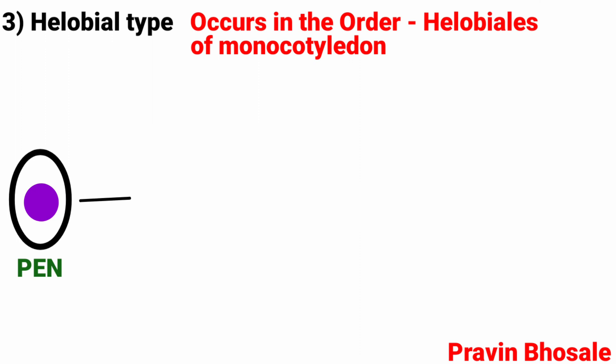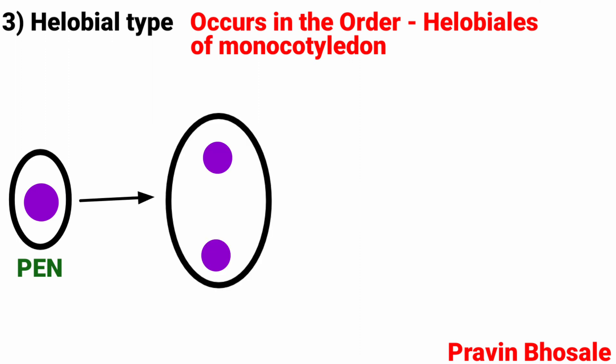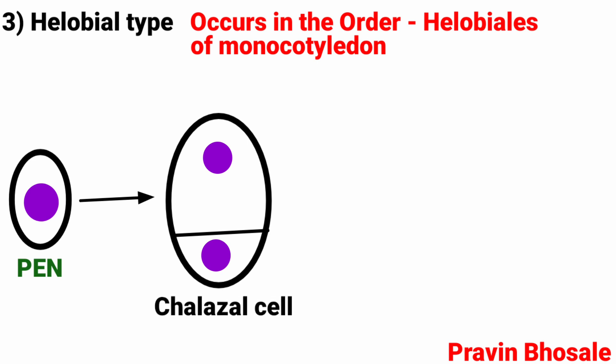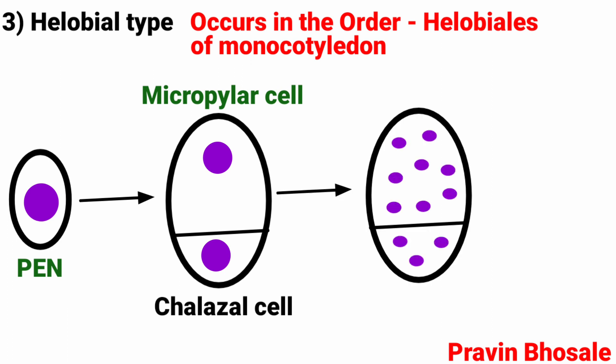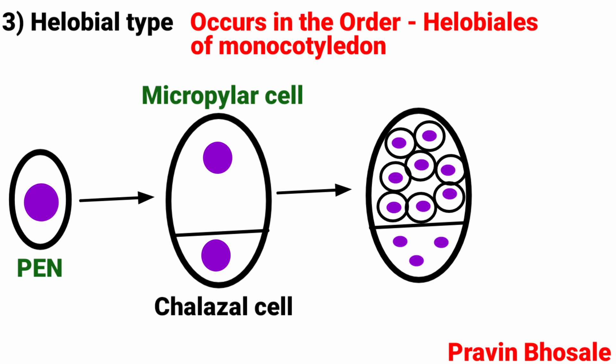Helobial type: it occurs in the order Helobiales of monocotyledons. In this case, the first division of the primary endosperm nucleus is followed by a transverse wall which divides the cell unequally. The smaller cell is called the chalazal cell and the larger cell is the micropylar cell. The nuclei in each cell then divide by free nuclear division, and walls develop between nuclei in the micropylar chamber. It is intermediate between cellular and nuclear types. Example: Asphodelus.